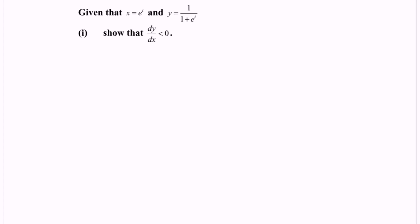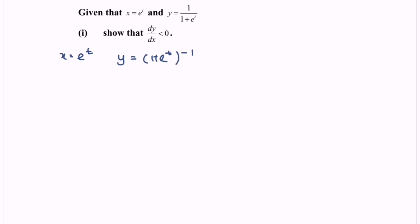Hello everyone, welcome to my channel. In this video, I'm going to discuss implicit differentiation. Given x equals e to the power of t and y equals 1 plus e to the power of t to the power of negative 1, show that dy/dx is less than 0.